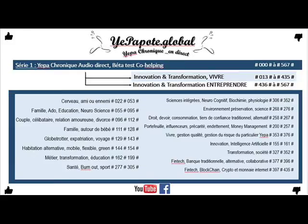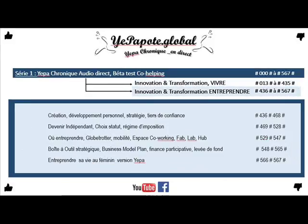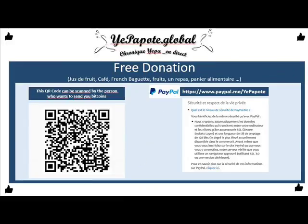Qui dit formalisme lourd, dit nécessité de passer par des tiers de confiance : avocats, experts comptables et autres. Ça va engendrer des frais supplémentaires. Mais il me semble qu'il est possible parfois de déduire ces frais de tiers dans le cadre de votre structure. Donc regardez ce qu'il est possible de faire.